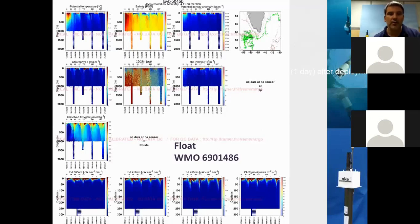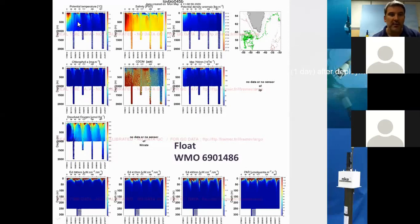Still illustrating this flexibility, a time series from the LOV website shows that at certain periods this float realized some deep profiles by telecommand. This illustrates the ability to change a mission scheme depending on seasonality and the presence of interesting signals.